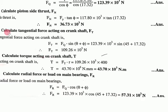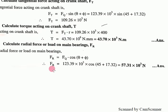Calculate tangential force acting on crankshaft: Ft = Fq sin(θ + φ) = 109.26 × 10³ N. Then calculate torque on crankshaft: T = Ft × r = 109.26 × 10³ × 400 = 43.70 × 10³ N·m. Calculate radial force Fr = Fq cos(θ + φ) = 57.31 × 10³ N.